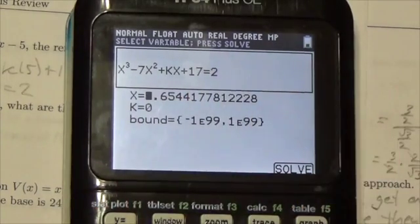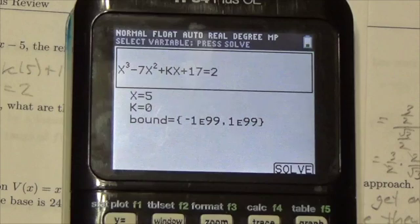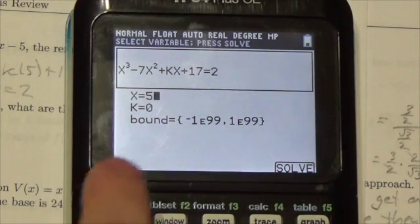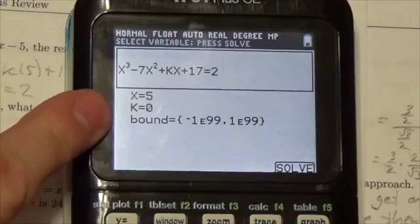Now, I know that x is going to be five because of the remainder theorem. This is why I don't mind this particular method showing you guys, because you still need to know the remainder theorem. But I'm going to let x equal five, and then what I'm going to do here is I'm going to come to k.